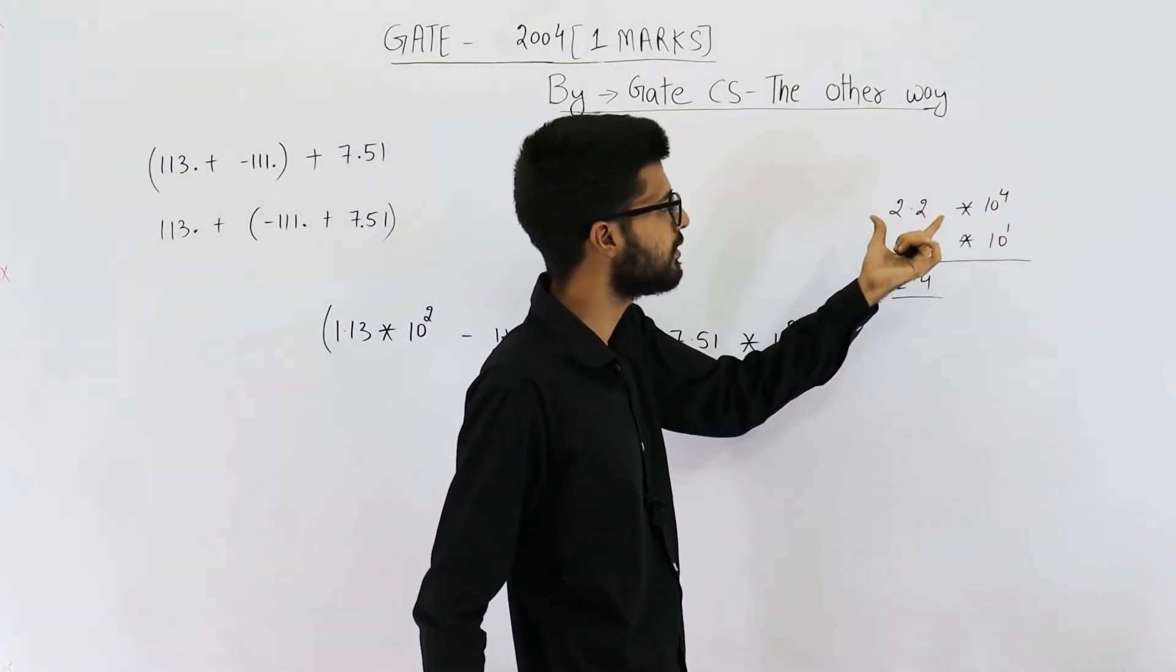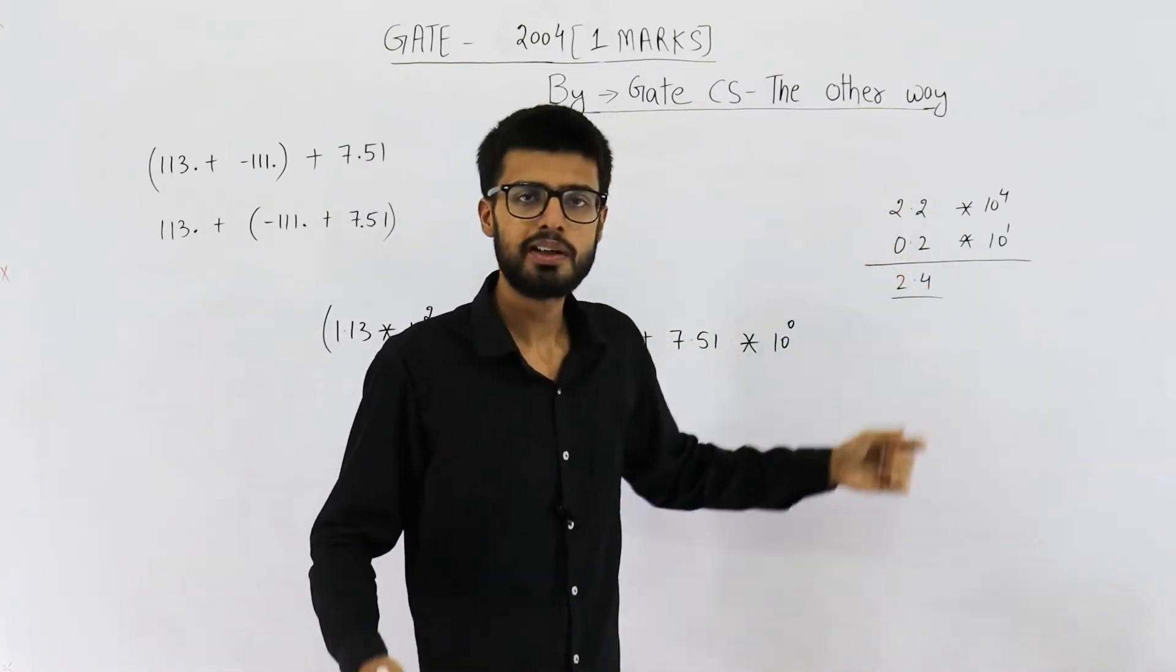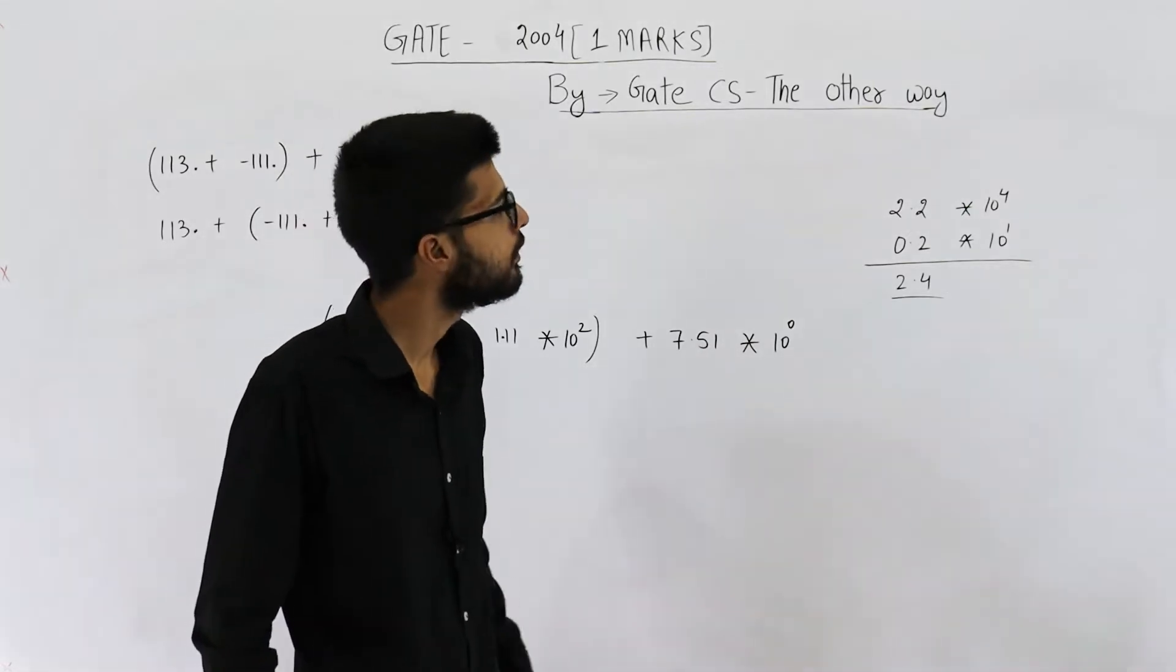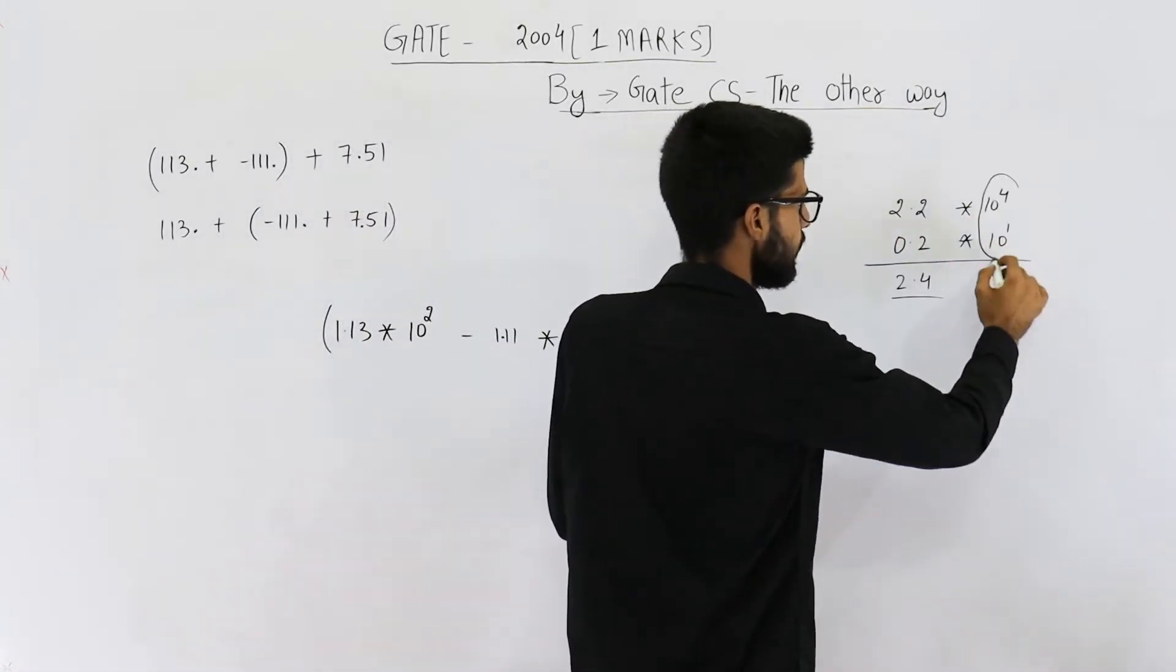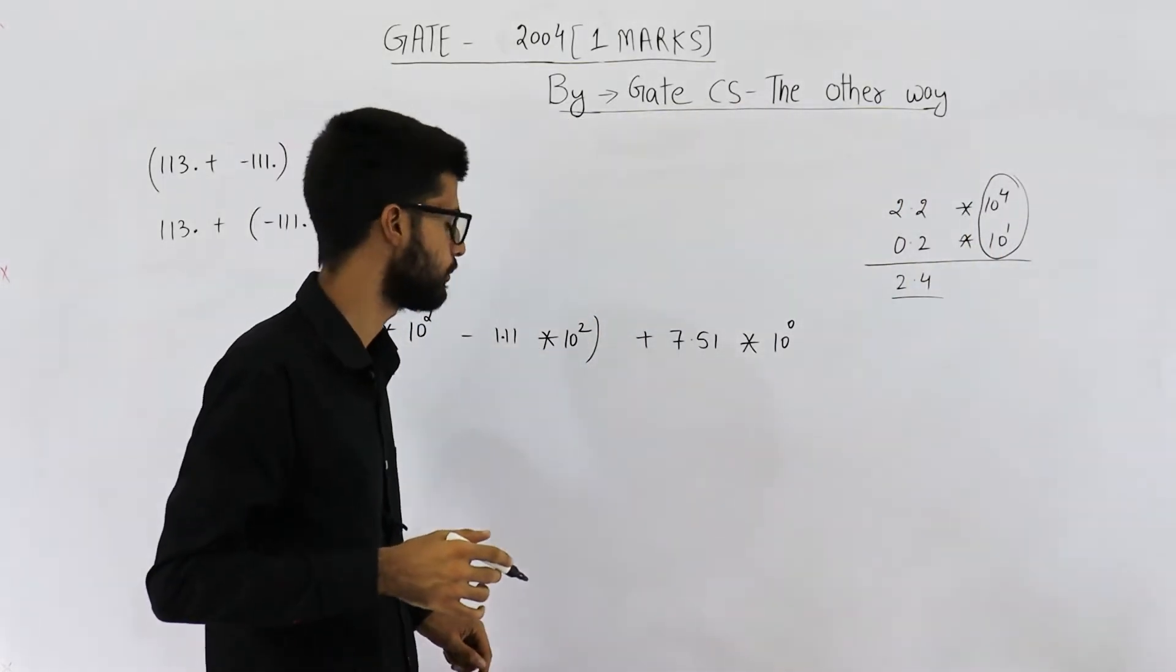This is not 2.2, it's actually 22,000. This is not 0.2, it is actually 2. So 22,000 plus 2 has to be performed. That is, we need to make these exponents equal as step 1. Then we are going to add.